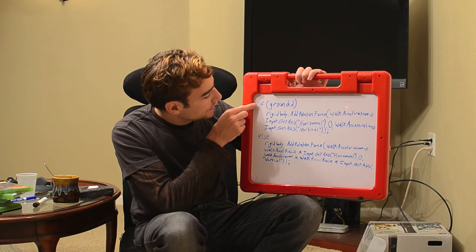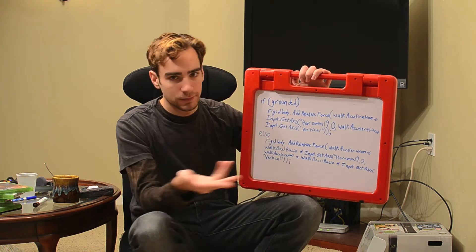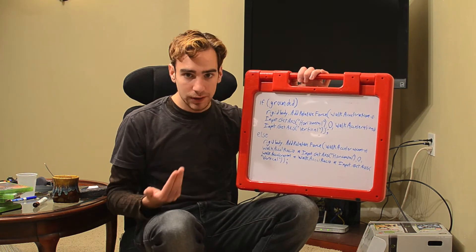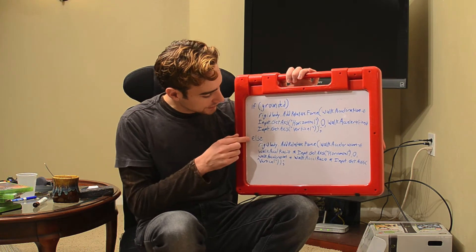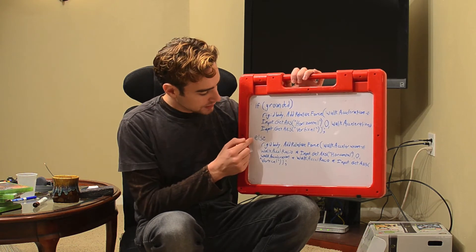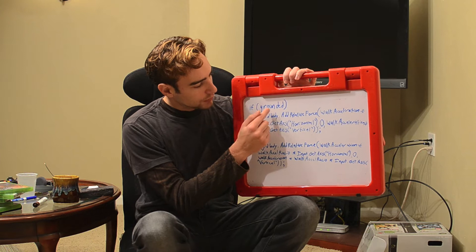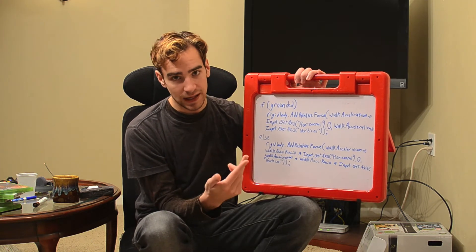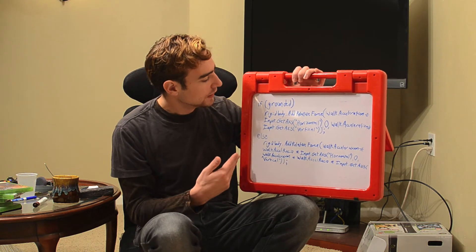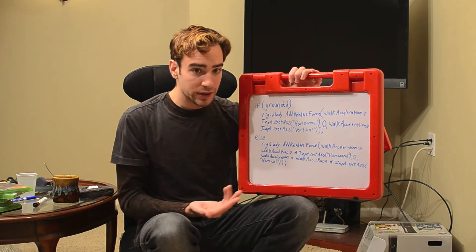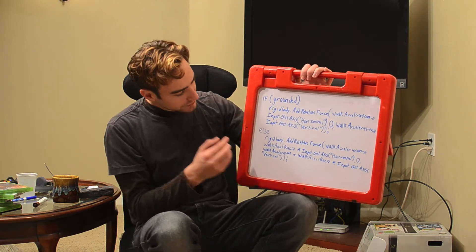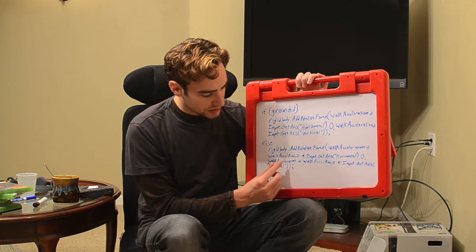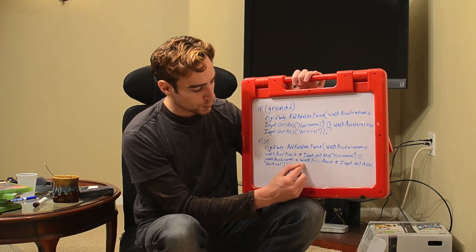What we're going to be adding is an if(grounded) statement — so if our feet are touching the ground, we run this line of code exactly as it is running right now. What we're going to be changing is the else — so if we are not grounded. We could write else, or if grounded equals false, or exclamation mark grounded, which means 'not'. Exclamation mark means 'not' inside of if statements. So basically if we are not grounded, we run this line of code, which is the exact same thing but instead of using simply walkAcceleration, we have walkAcceleration times walkExcelRatio.